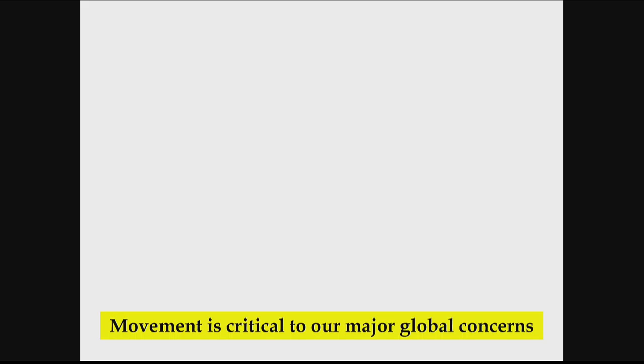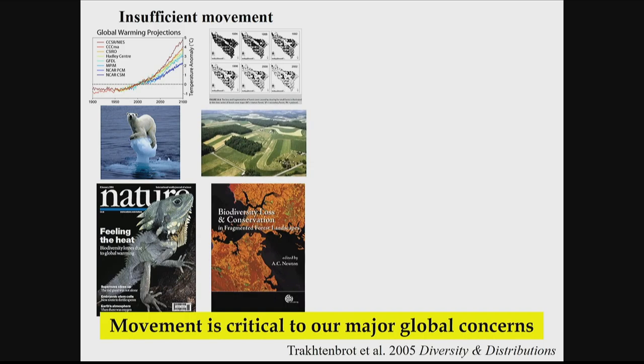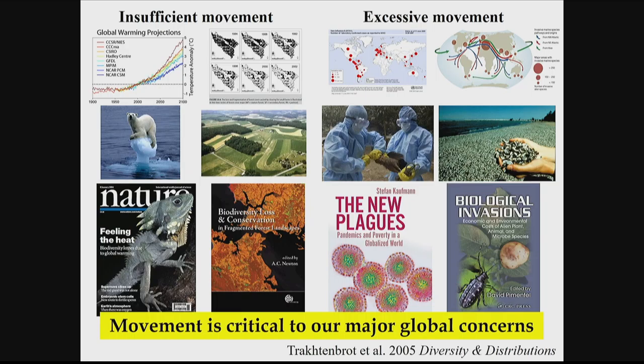In terms of environmental concern that we face today, for some issues like global warming, habitat loss and fragmentation, the main concern is insufficient movement — whether animals and plants will be able to track suitable habitats. On the other hand, we have species with incredible movement capacity, and this is the problem behind diseases, pest agriculture, and invasive species. Movement is the key process in all four of these major environmental concerns.